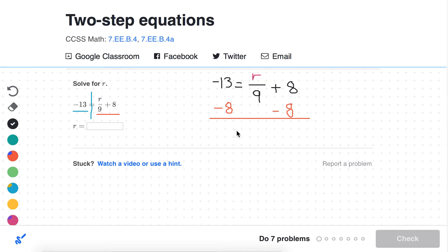So on the right side, we've simplified it because we now just have r divided by 9. This has been canceled out, which was our goal in subtracting 8 from both sides. Over here on the left, we have negative 13 minus 8, which is the same thing as negative 13 plus negative 8. And that's negative 21.